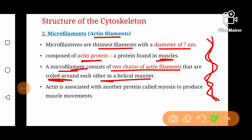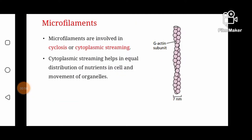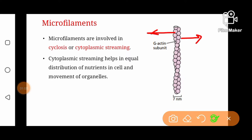Actin protein is associated with another protein called myosin, which helps in muscle contractions and muscle movements. Microfilaments are also involved in cyclosis or cytoplasmic streaming — the movement of cytoplasmic material that helps in the equal distribution of nutrients and organelles within the cell.